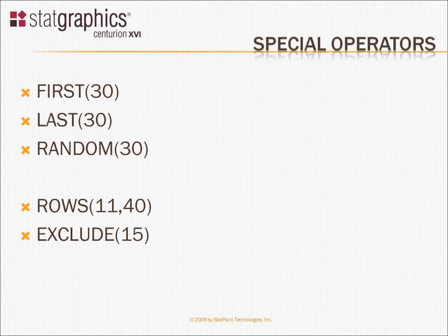You can also use an operator called "rows" to analyze data within a range of rows. For example, typing "rows 11, 40" tells the program to pull the data only from rows ranging from 11 through 40. If you want to exclude a single row and analyze every other row, you can type something like "exclude 15", which would analyze all the data except row 15.